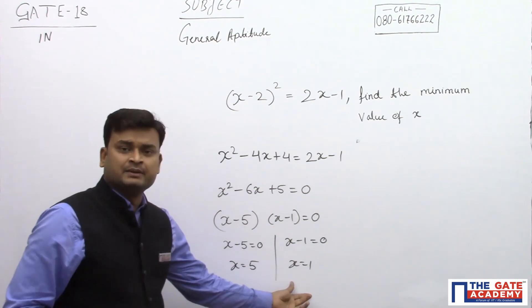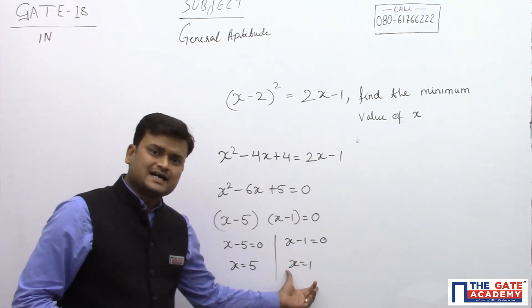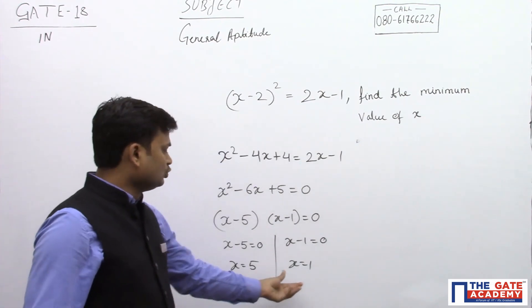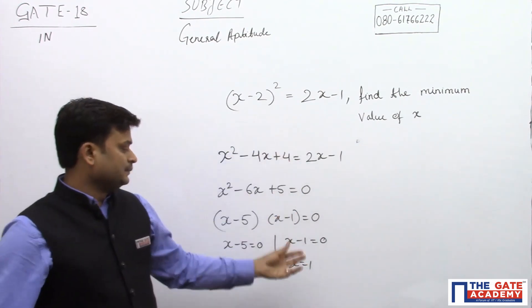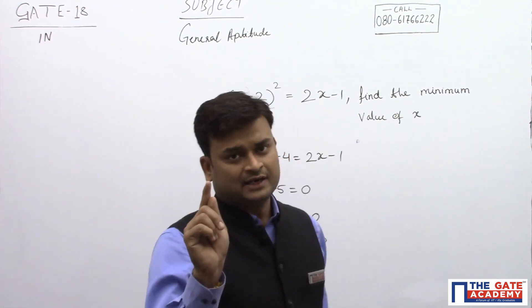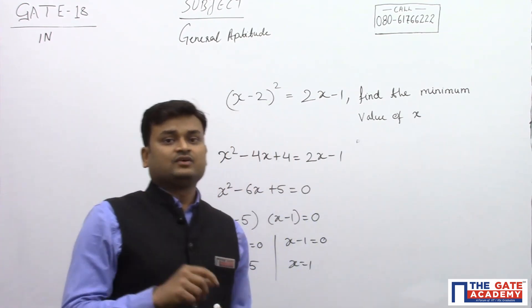So out of these two which is minimum? This one is minimum. They are asking about the minimum value of x which satisfies this equation. These are the two values which satisfy this equation and minimum is 1. So which option you will take? You will take option 1, the answer where 1 is given.